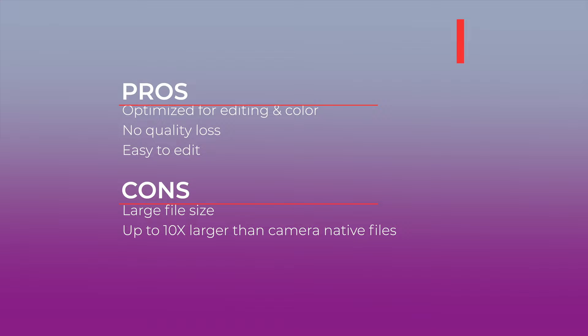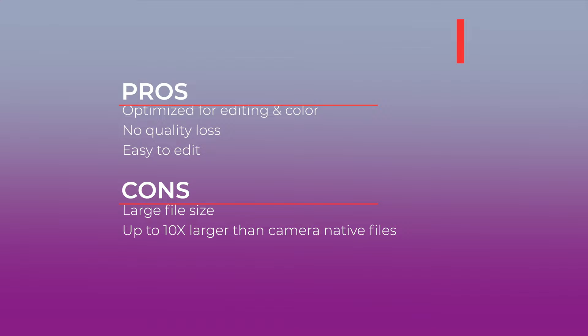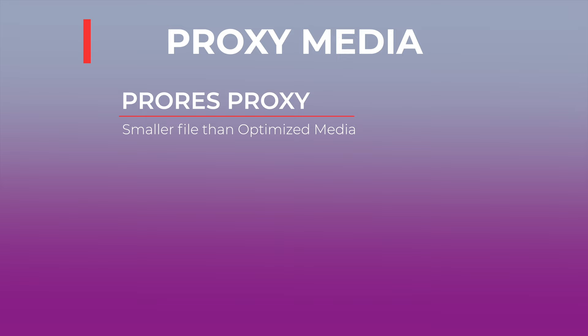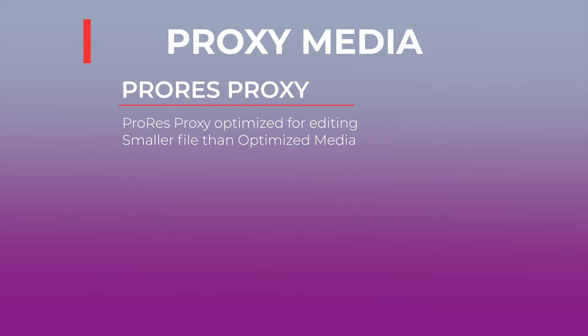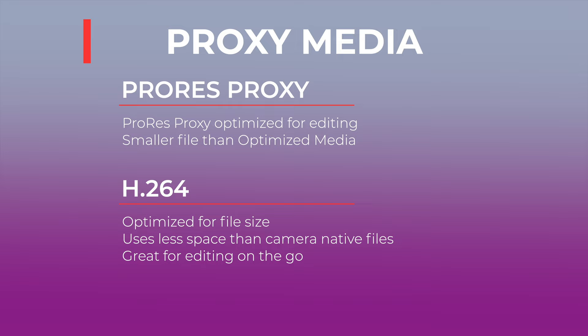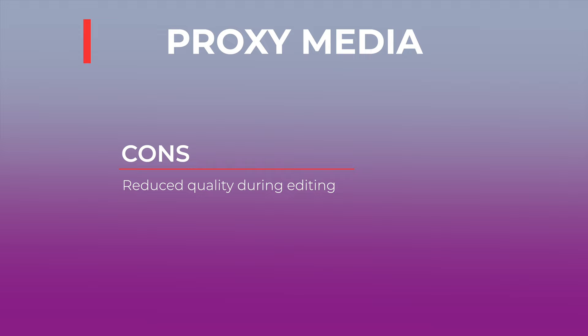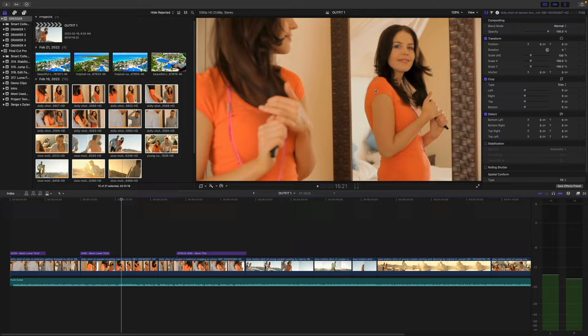The downside to optimized media is file size — these files can be over 10 times bigger than your original media files. If hard drive space is an issue, proxy media may be a better option. When you convert your files to proxy media, you can either choose ProRes Proxy or the H.264 codec. The ProRes Proxy codec is designed to be easier to edit, and even though the file sizes can still be larger than your camera files, they're not nearly as big as ProRes 422. The H.264 codec is optimized for size, using considerably less space than even your camera-native files, and is a great option if you want to edit on the go. The downside to proxy media is you're giving up quality, but that's only during your edit. Final Cut Pro allows you to easily switch back to original media with just a couple of clicks, so you can edit using proxy media and switch back to original files before export for a full quality export.